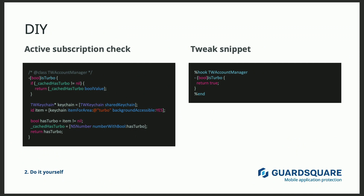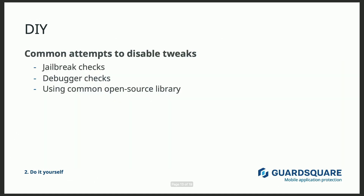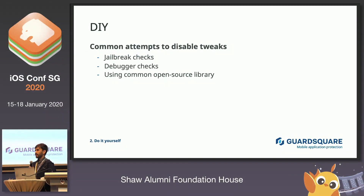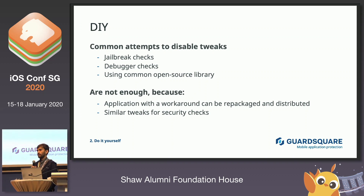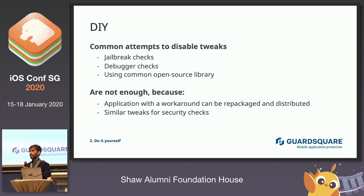With DIY solutions, what developers often do is add some jailbreak checks or reach for an open source library, thinking that would be enough to stop users from using this kind of tweak. However, that's not really the case. An application can be repackaged, distributed, and later actually run on a non-jailbroken device. What's often simpler and more common is to come up with tweaks that make the security checks neglect — that is, bypass — the security checks. This is often how it's done, just targeting the application logic. So this just won't be sufficient.